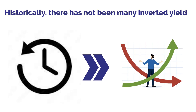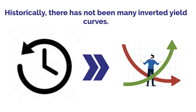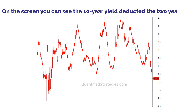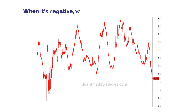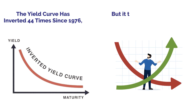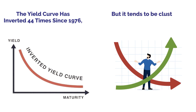Historically, there have not been many inverted yield curves. On the screen, you can see the 10-year yield deducted from the 2-year yield. When it's negative, we have an inverted yield curve. The yield curve has been inverted 44 times since 1976, but it tends to be clustered in small time windows.